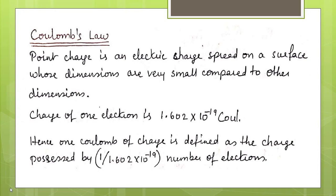A point charge is a very small electric charge whose dimensions are very small. The charge of one electron is 1.602 × 10⁻¹⁹ Coulombs. So, 1 Coulomb of charge is defined as the charge possessed by 1/(1.602 × 10⁻¹⁹) number of electrons.